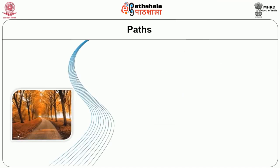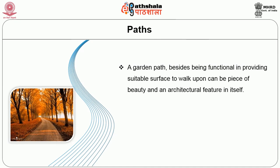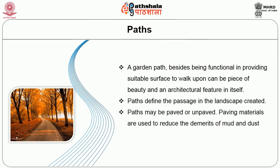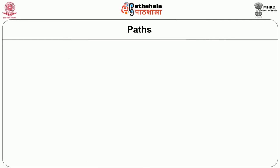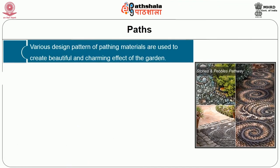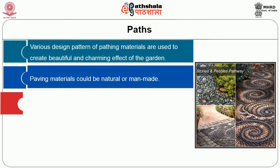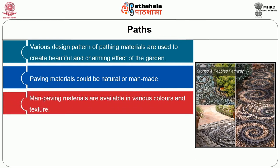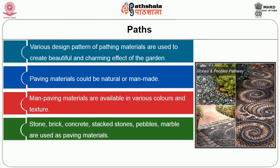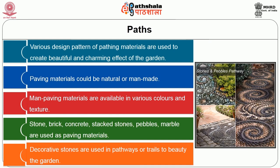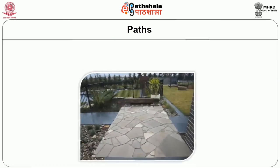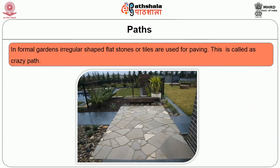A garden path, besides being functional in providing a suitable surface to walk upon, can be a piece of beauty and an architectural feature in itself. Paths define the passage in the landscape. Paths may be paved or unpaved. Paving materials are used to reduce the drawbacks of mud and dust. Paths facilitate easy circulation. Various design patterns of paving material are used to create a beautiful and charming effect. Paving materials could be natural or manmade. Manmade paving materials are available in various colours and textures. Stone, brick, marble, concrete and stacked stones are also used as paving materials. Decorated stones are used in pathways or trails to beautify the garden. In informal gardens, irregular-shaped flagstones or tiles are used for paving; this is called a crazy path.